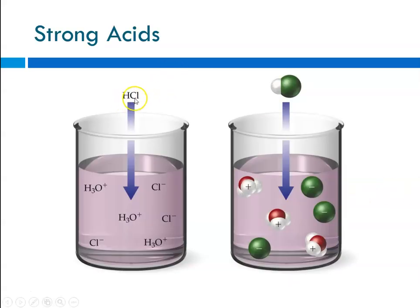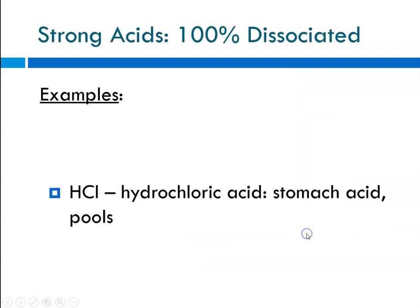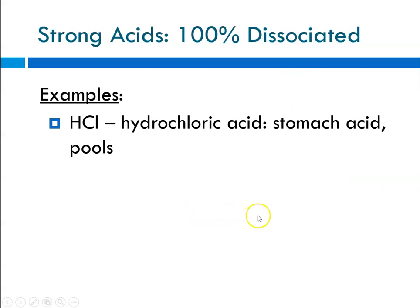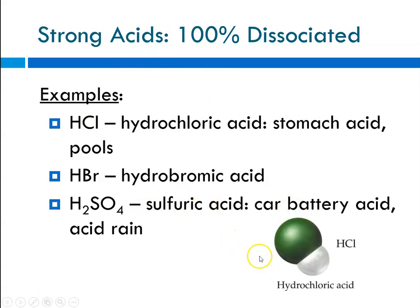If you take hydrogen chloride gas and bubble it into water, you get chloride ions and hydrogen ions — but the hydrogen ions attach to water and form hydronium ions. This is hydrochloric acid in a model representation. Examples of strong acids that are 100% dissociated include HCl (hydrochloric), HBr (hydrobromic), and H₂SO₄ (sulfuric). Real-world examples: hydrochloric acid is stomach acid; sulfuric acid is car battery acid and is also found in acid rain.